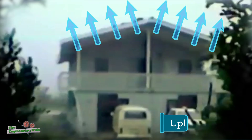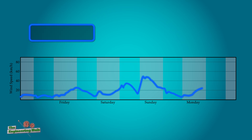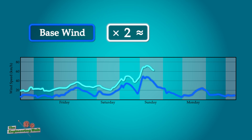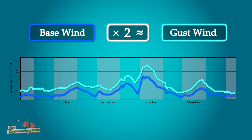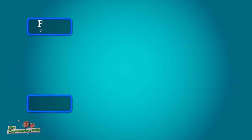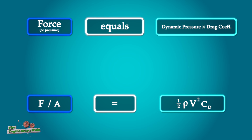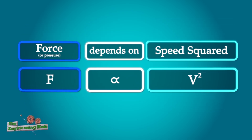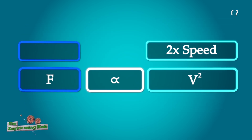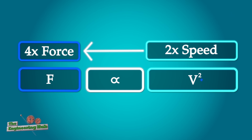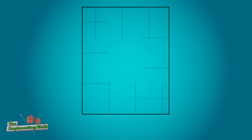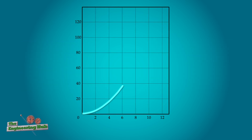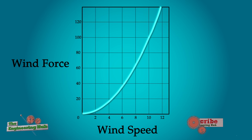Beyond base wind speeds, we need to look at peak gust winds to understand how much damage can be caused. Gust wind speeds are generally in the range of twice as fast as base wind speeds — so twice as much damage, right? Not quite. A simple part of the equations of wind that are well understood is the relationship between speed and pressure or force. When the speed is doubled, the pressure or force is actually quadrupled, because it depends on the square of the speed. Because of this exponential relationship, the distinction between base wind and gust can make a huge difference.